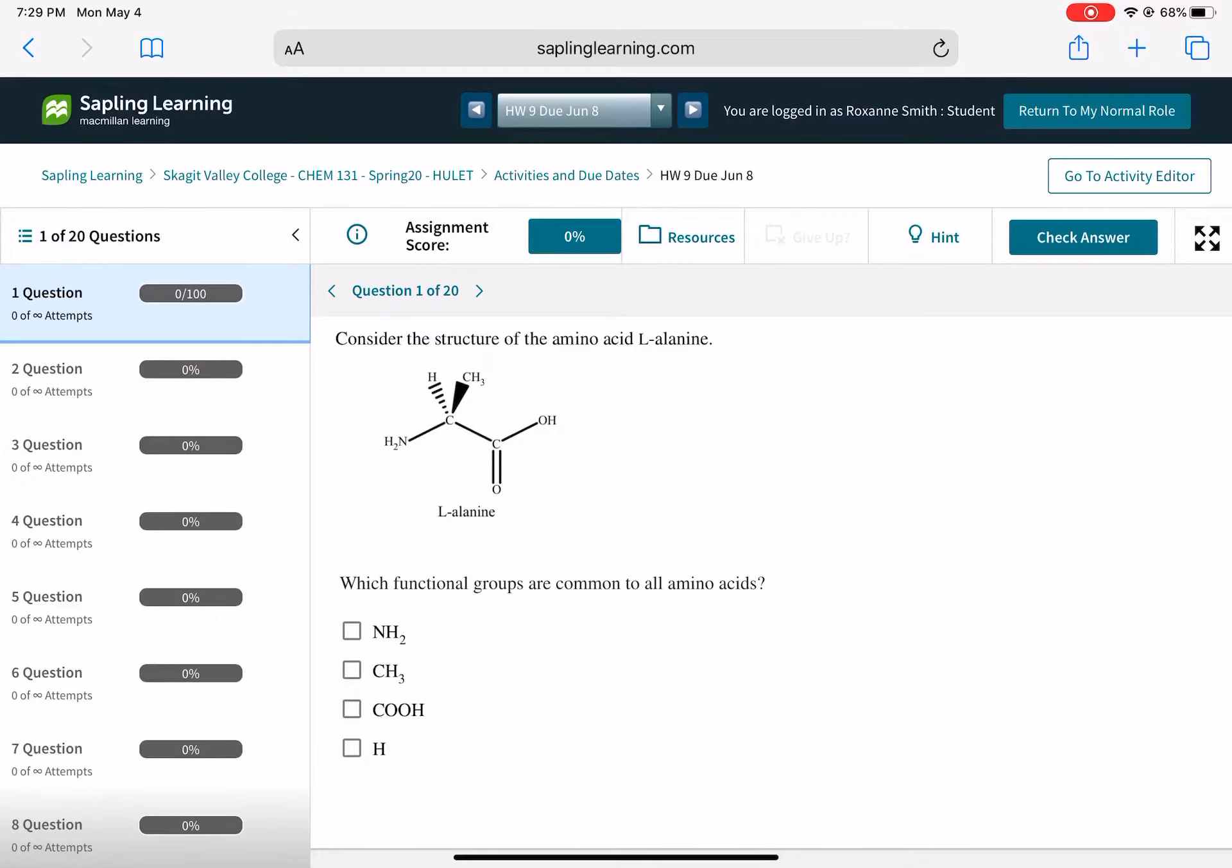Now let's take a look at the first few problems on Sapline Homework 9. So the first problem is giving you the structure of an amino acid, alanine, and it wants you to identify which functional groups are common to all amino acids.